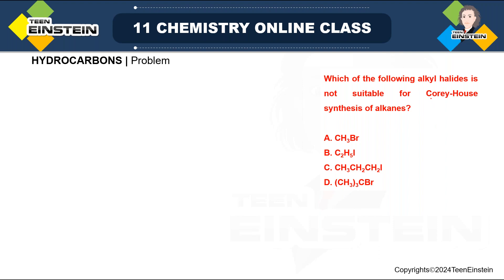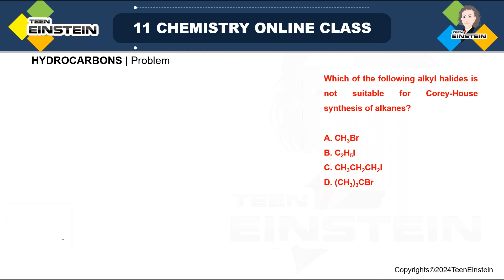Here we have a question related to Corey House synthesis of alkanes that we have already seen. It is asking which of the following alkyl halides is not suitable for this synthesis — that is, which haloalkane or alkyl halide we cannot use as a starting material for Corey House. We have seen that there is some restriction on the types of alkyl halides as starting material.